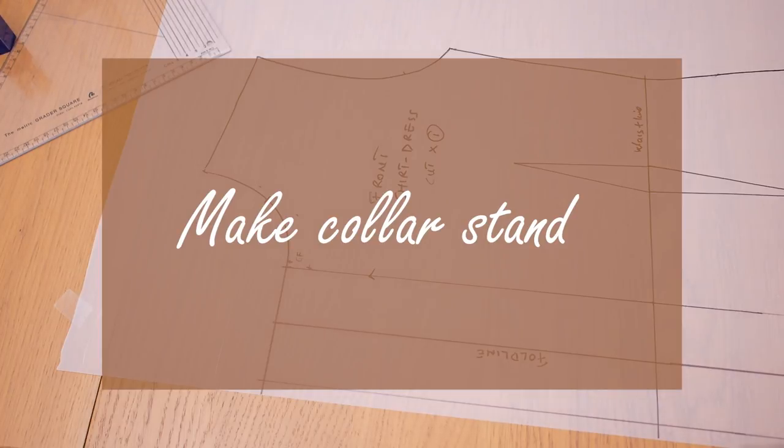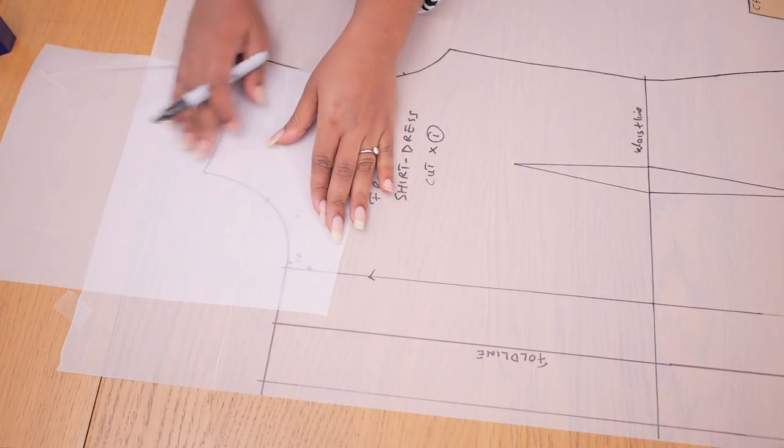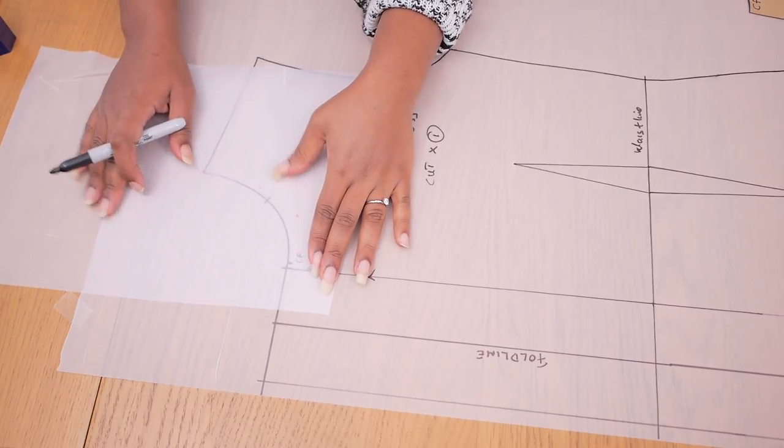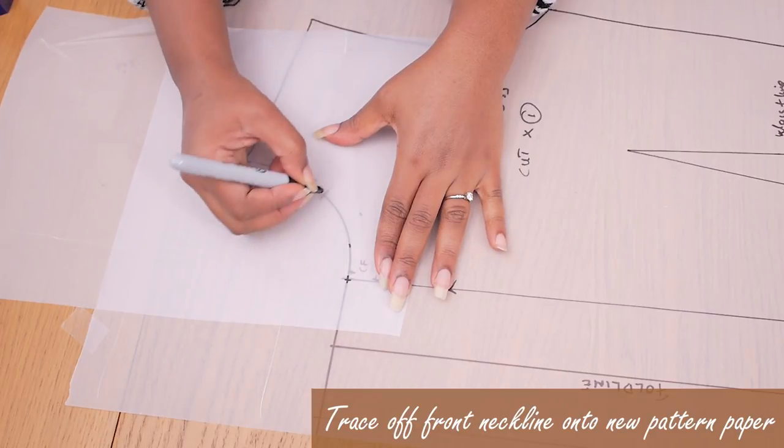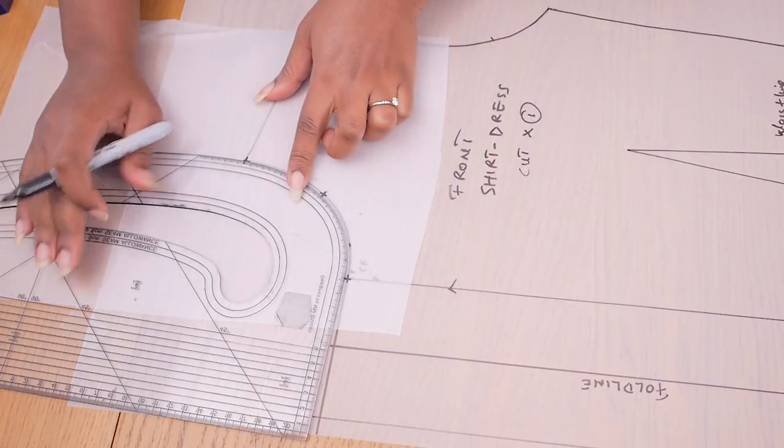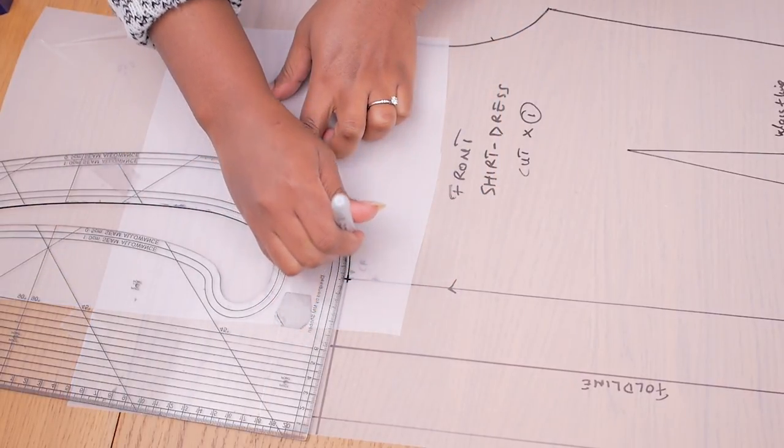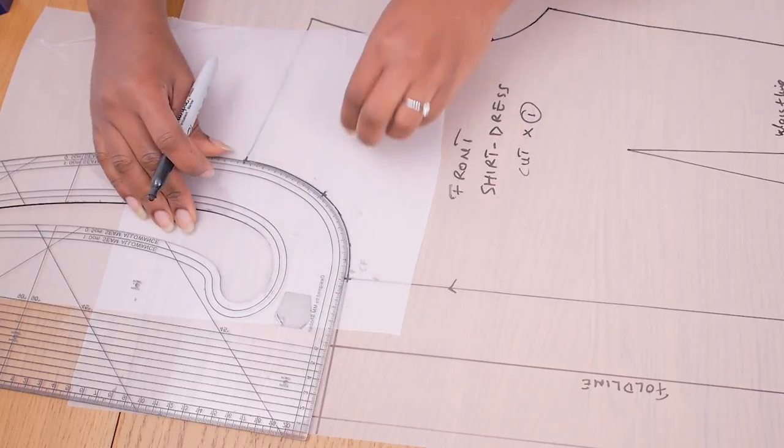So the next thing I'm going to be working on is to make the collar stand in which the collar sits. So I've gotten some fresh pattern paper about this size and I'm going to be tracing out the new front neckline starting from our center front around that front curve, the shoulder points as well and I'm just going ahead to connect the dots I've made using my pattern master and my marker pen.